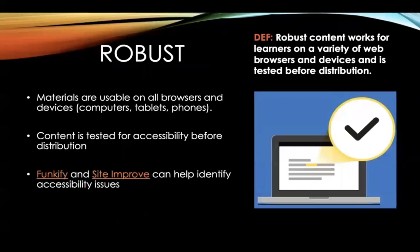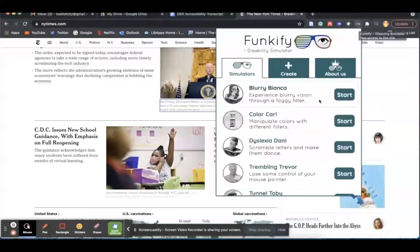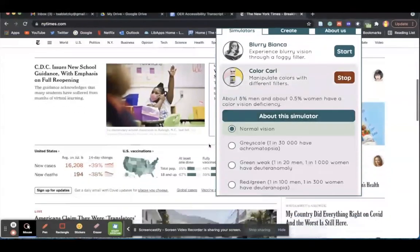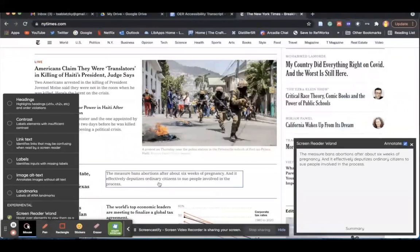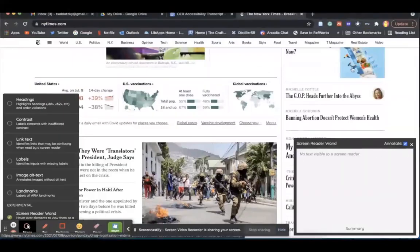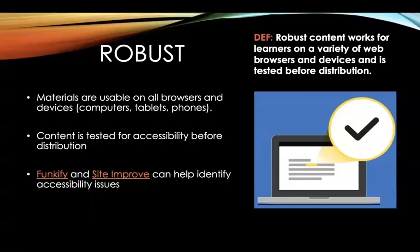Number four: robust content works for learners in a variety of web browsers and devices, including tablets and smartphones. Robust content is also tested before it is distributed to ensure that it meets accessibility guidelines and can be accessed by everyone. Fortunately, there are a couple of tools to help check the accessibility of your OER content. First, there is a browser extension called Funkify, which simulates how people with various physical and mental disabilities will interact with any web page. Funkify also has a feature called Robot Robin, which allows the user to simulate how a screen reader would interact with the page and highlight potential accessibility issues. Siteimprove's accessibility checker is another great resource for identifying accessibility issues of a page. Both of these tools will help identify accessibility issues and offer solutions.